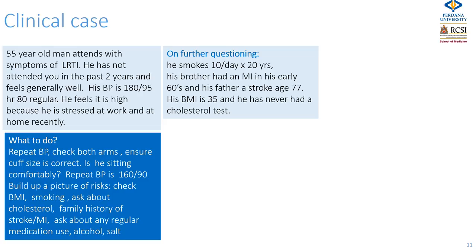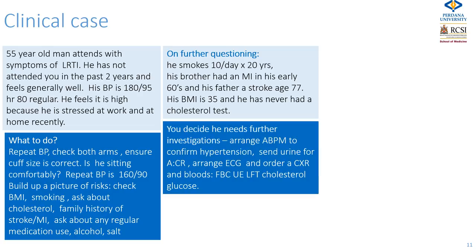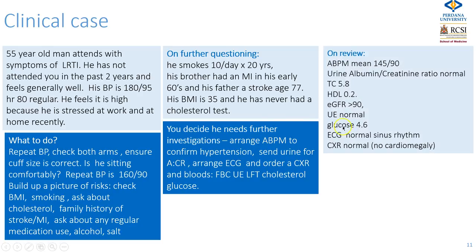On further questioning, he smokes 10 daily for the last 20 years, his brother had a myocardial infarction in his early 60s, his father had a stroke aged 77, his BMI is 35, and he's never had his lipids checked. You arrange an ambulatory blood pressure monitor, send urine for an albumin-creatinine ratio, dipstick the urine for protein and blood, arrange an ECG, order a chest X-ray, and arrange bloods. On review: mean ambulatory BP is 145 over 90, albumin-creatinine ratio is normal, total cholesterol is 5.8 with HDL of 0.2, eGFR more than 90, blood sugar 4.6, ECG shows sinus rhythm with no LVH, and chest X-ray shows no cardiomegaly.